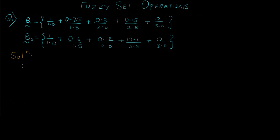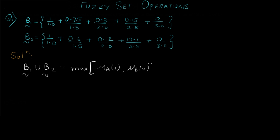In order to calculate the union of two fuzzy sets, here is the formula: it is max. This simply means that we have to compare the numerators, or the upper values, of these two sets and take the maximum. We can only compare two elements with the same lower limit value — so we can compare matching denominator terms between the two sets, but not terms with different denominator values.